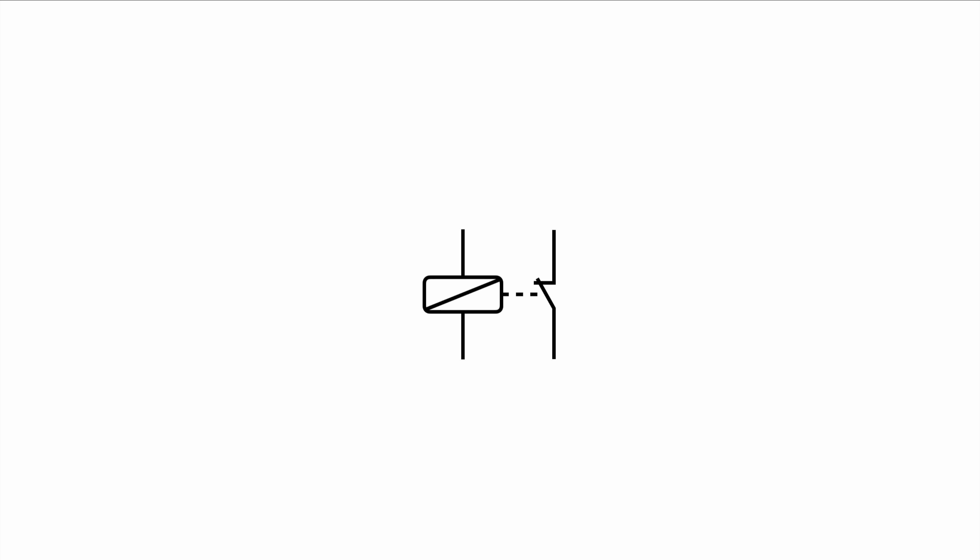And obviously when there is an opener or a breaker there's also a closer or a maker. So again you have a coil as the base element and then you have the circuit of the load which is in our case opened by default and if activated it will close the circuit. So this type is again called the closer or maker.